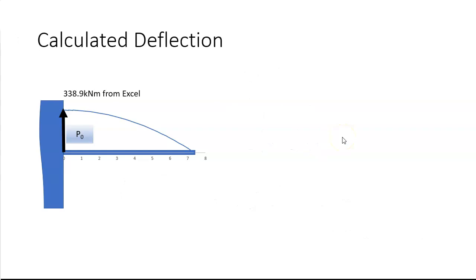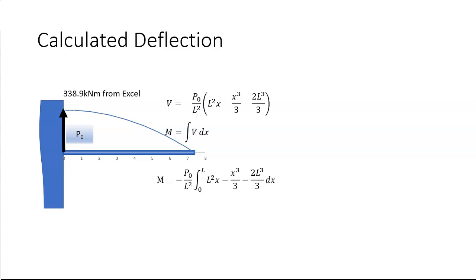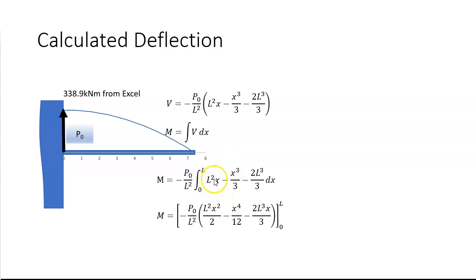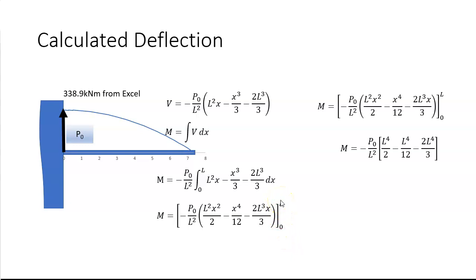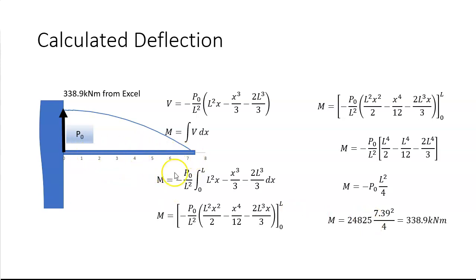The bending moment is the integral of the shear force, integrated from zero to l. Doing that integration gives l²x²/2 minus x⁴/12 minus 2l³x/3. Evaluating from zero to l gives a bending moment of negative p₀l²/4. If p₀ is 24,825 and l is 7.39 meters, that gives 338.9 kilonewton-meters.